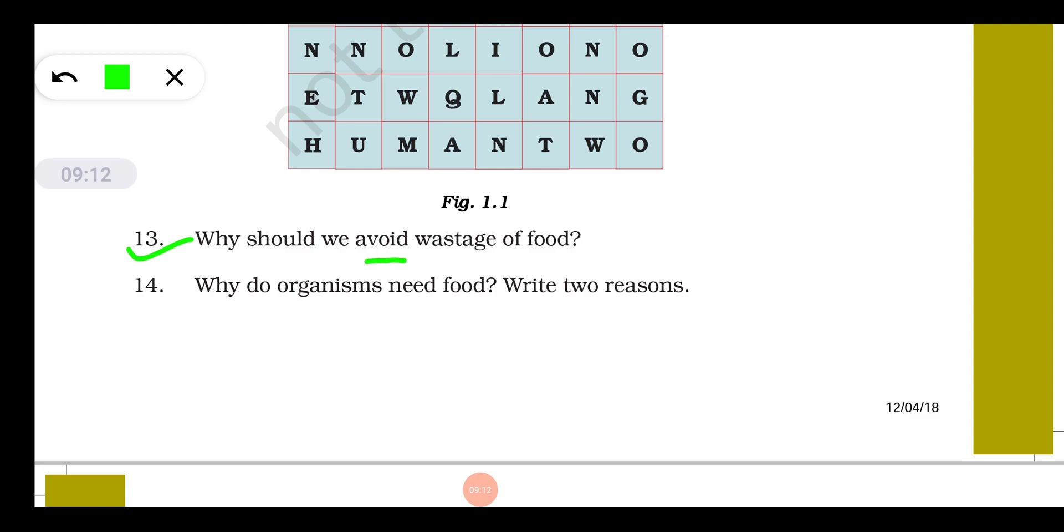Question number thirteen: why should we avoid wastage of food? Dear students, you know food is very costly and we obtain food through very hard work at various levels. Number one, farmer toils hard in the fields, then he obtains the grain and vegetables. Lot of effort is involved in processing the food, in grinding, crushing, and then converting it into atta and ana, and then effort is also required in cooking. In the world there are many people who don't get enough food even to eat for their survival. That is why it is our moral duty not to waste food.